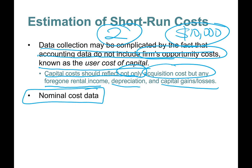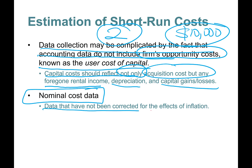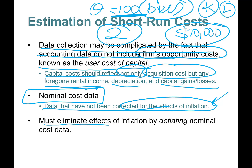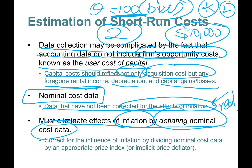The other issue is nominal cost data — data not corrected for inflation. Especially in 2022, we experienced a lot of inflation. You might be producing the same 100 bikes a week with the same capital and labor, but if input costs have risen your nominal cost is higher. You need to correct for this by deflating nominal cost data using an appropriate price index called the implicit price deflator.